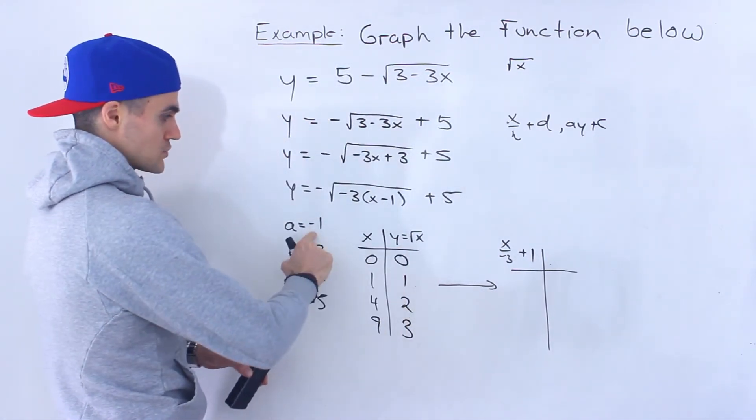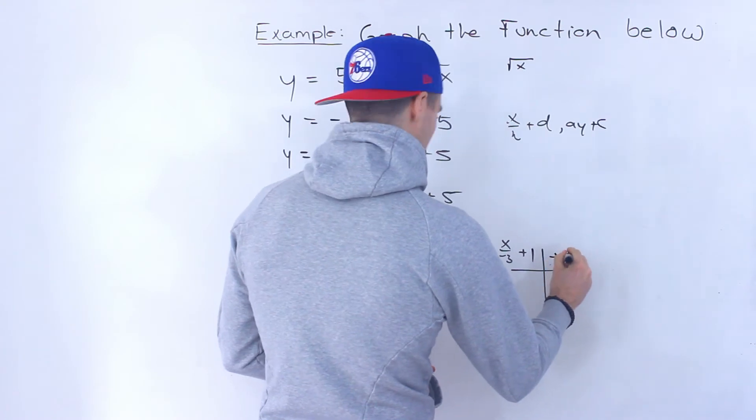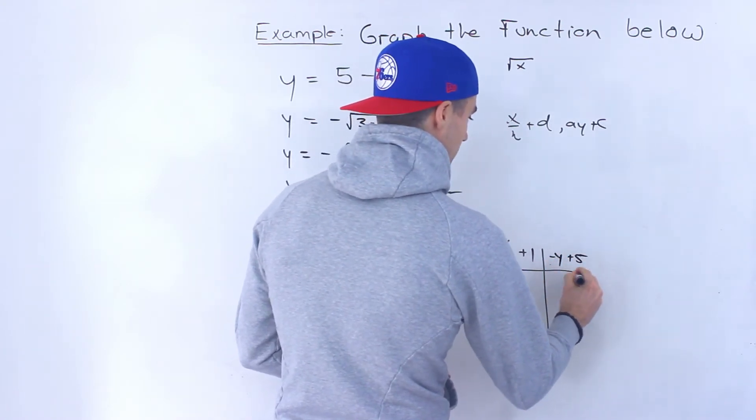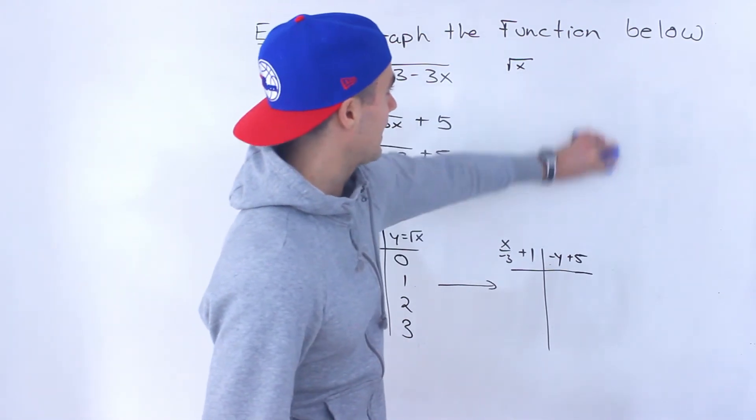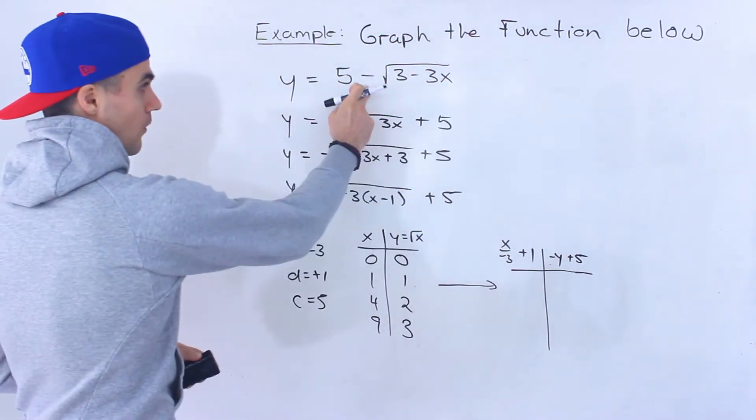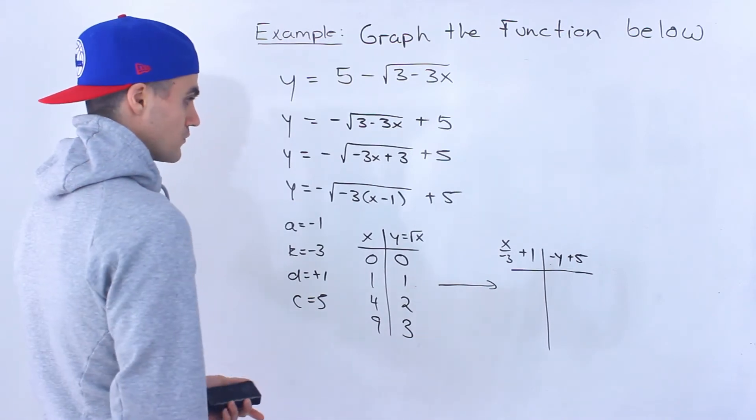All of the y values are going to multiply by negative 1, and then we're going to add the c value of 5. So this table here is going to be the table for this transformed function.